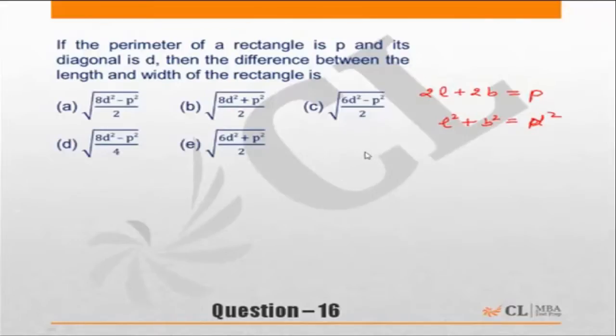So we can see L minus B whole square is L square plus B square minus 2LB. Or if we square both sides of this equation, I will be getting 4L square plus 4B square plus 8LB is equal to P square.